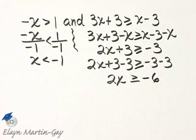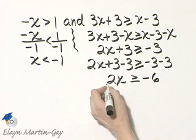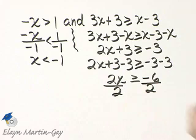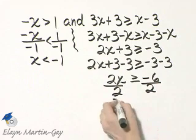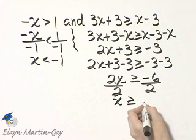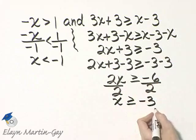Don't worry about this being negative. Don't worry about what you divide both sides by. I'm dividing both sides by positive 2, so I do not reverse the direction of my inequality symbol and I have x greater than or equal to negative 3.